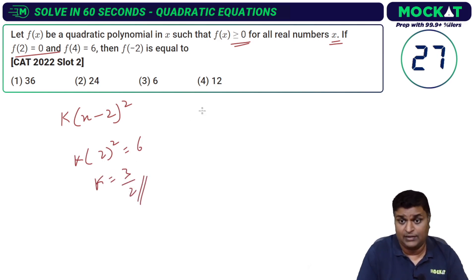K over here is going to be 6 by 4 or 3 by 2. I found that. I need to find f of minus 2. K into minus 2 minus 2 the whole square, and k I know over here is going to be 3 by 2.